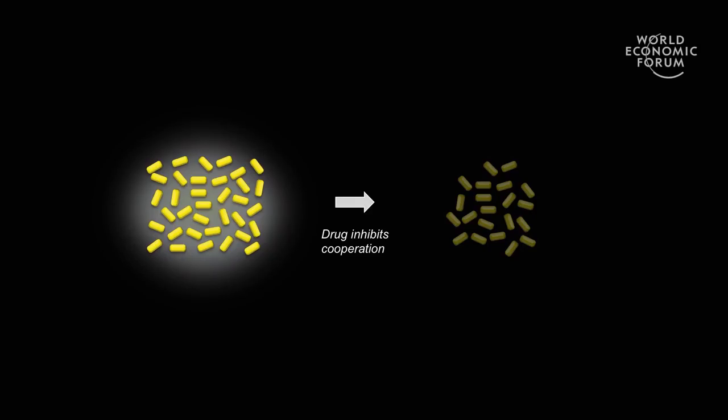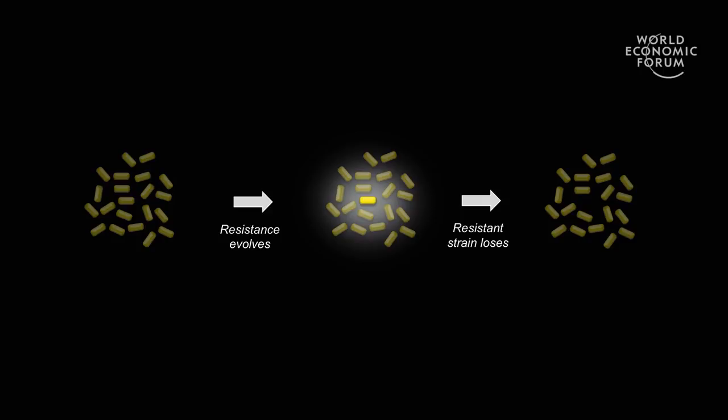The idea is: if we understand that bacteria need cooperative products to grow, can we inhibit their cooperation and thereby inhibit their growth? We're doing just this with salmonella — inhibiting it with a drug and preventing it from growing on surfaces via a cooperative secretion mechanism. So we can inhibit their growth, but here's the clever part. If a resistant strain evolves, it cooperates with surrounding cells but is the only one paying the cost — so it will get out-competed. When we treat salmonella with a drug that acts in this way, we don't see resistance evolution.